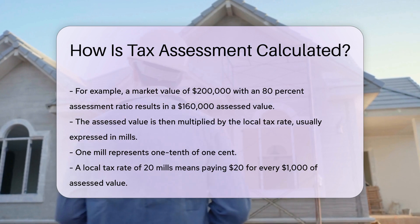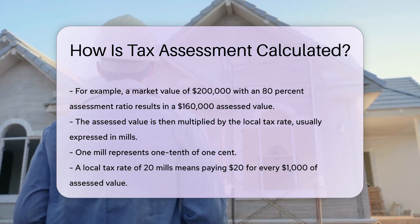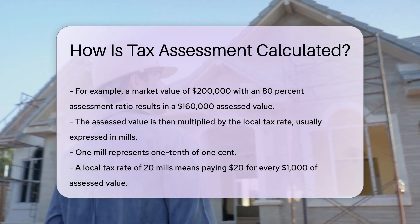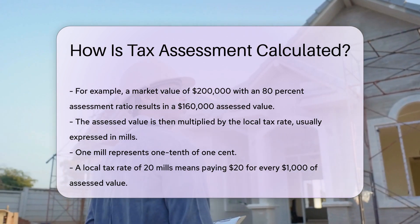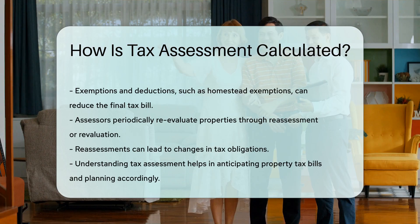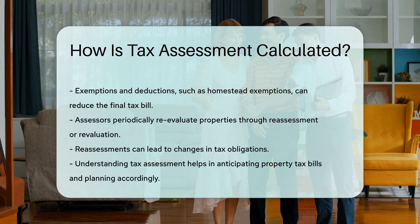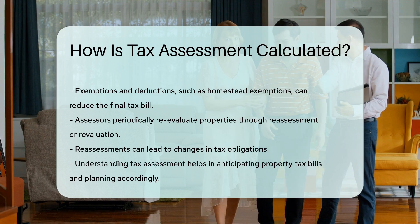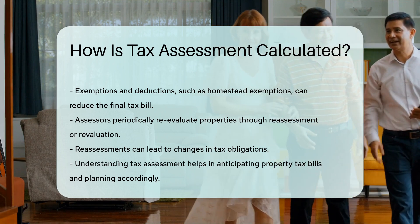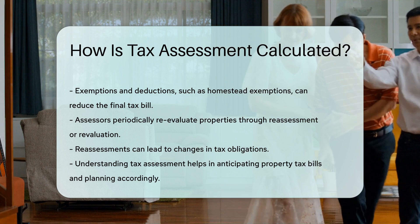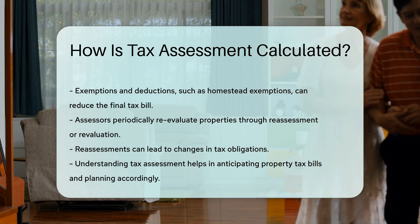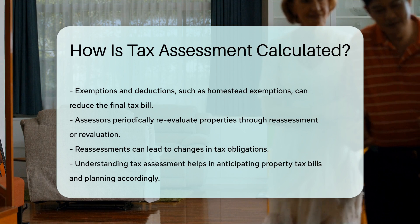Exemptions and deductions can also affect your final tax bill. These vary widely depending on your location and personal circumstances. Common exemptions include homestead exemptions, which reduce taxes for primary residences. Assessors also periodically re-evaluate properties to ensure assessments remain current — a process known as reassessment or revaluation.